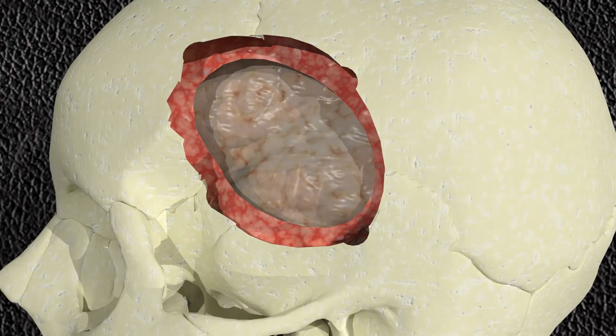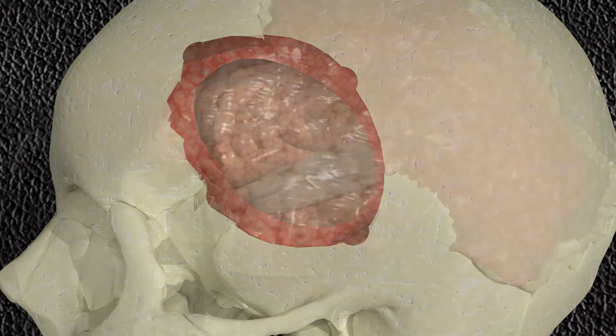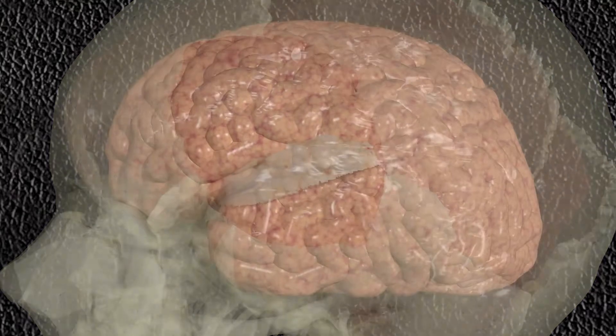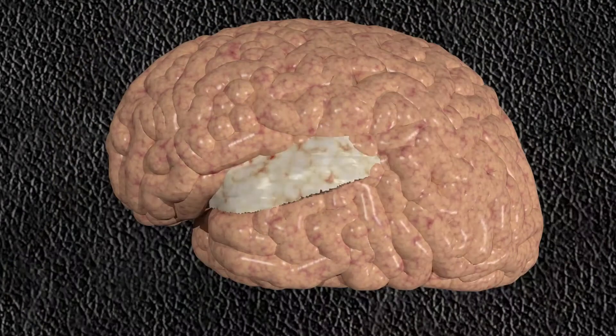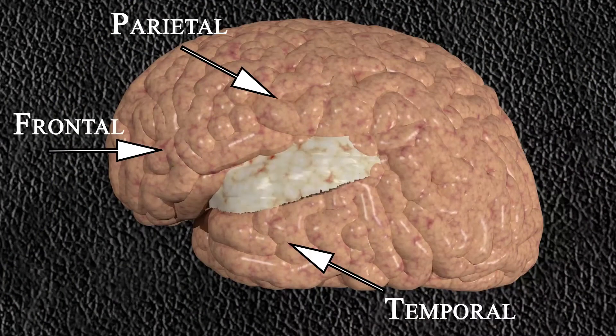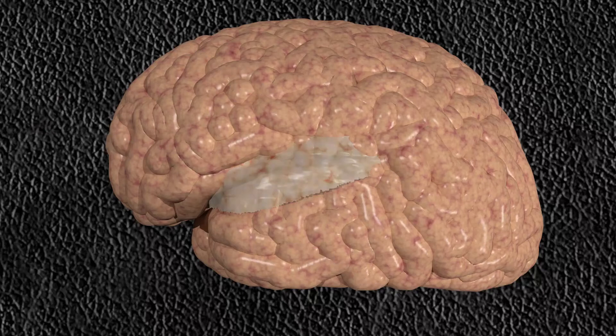The sylvian fissure, also known as the lateral sulcus, is the most prominent landmark on the surface of the human brain, dividing the frontal and parietal lobes superiorly from the temporal lobe inferiorly.